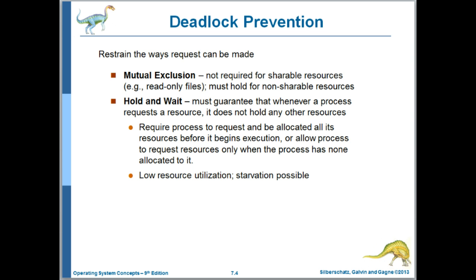Hold and wait — we can prevent that from happening by requiring each process to request and be allocated all its resources before it begins execution. And then, during execution, not allowing it to request more, or requiring it to release all resources before requesting more. As noted here, this will yield low resource utilization, because some processes may only need a particular resource for a brief period of time while having actually long run times, and those resources would be unused for much of the time. Starvation is also possible.